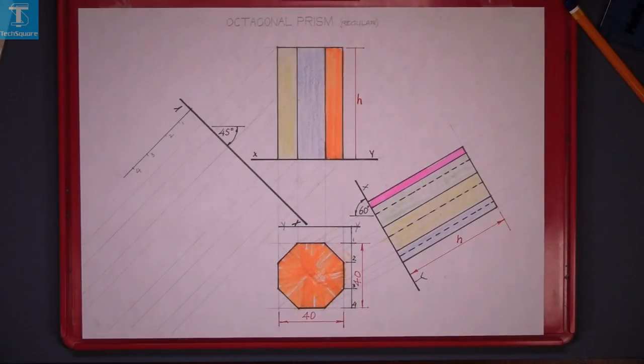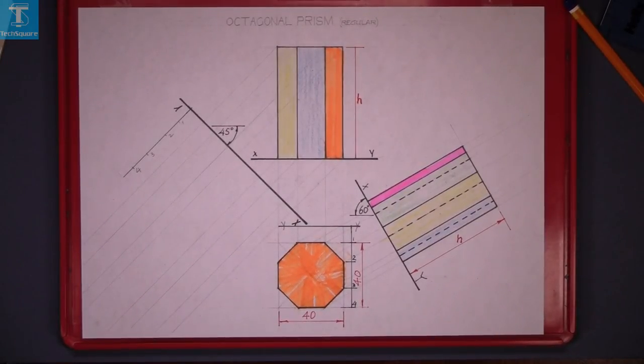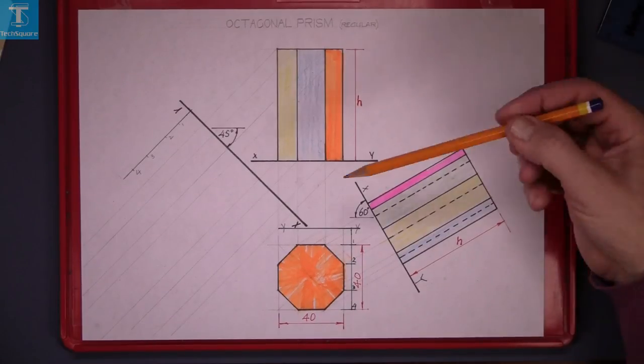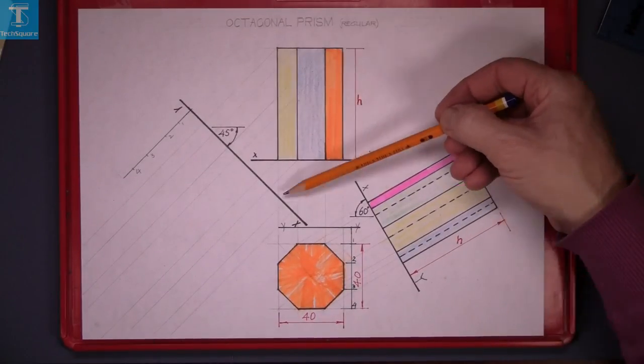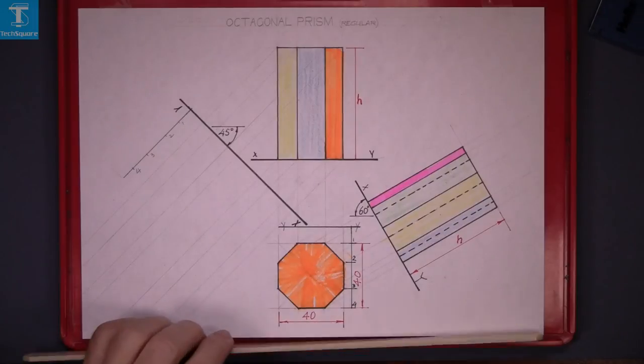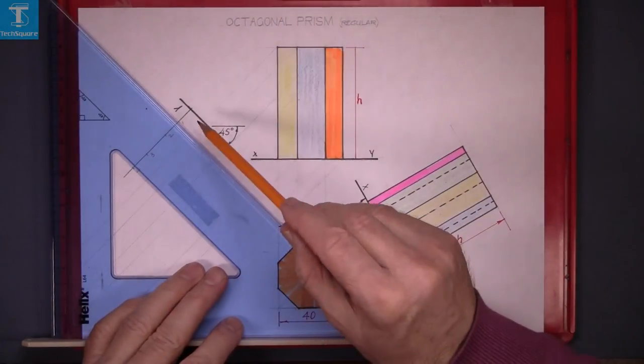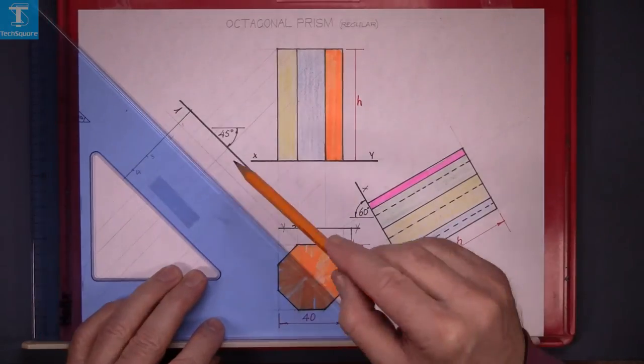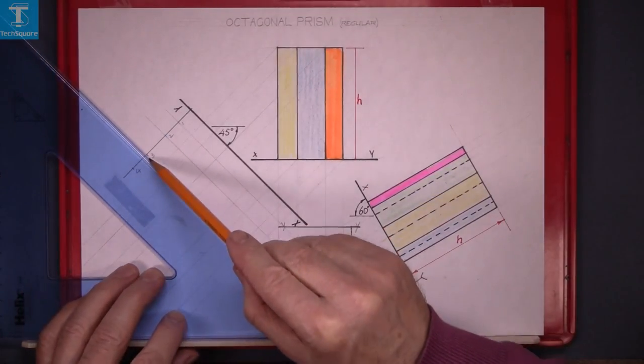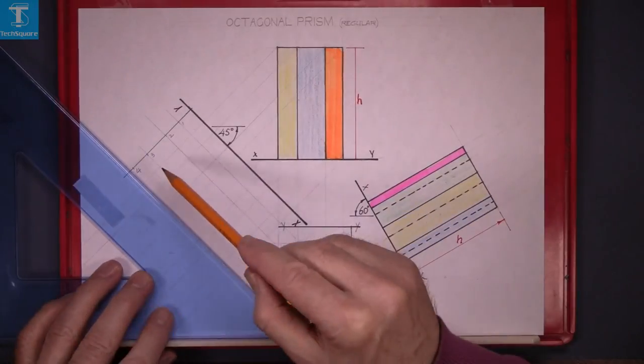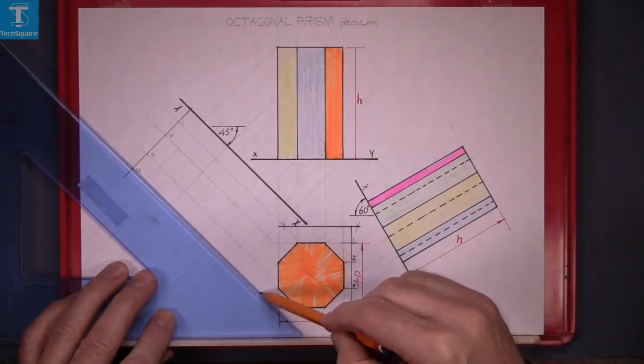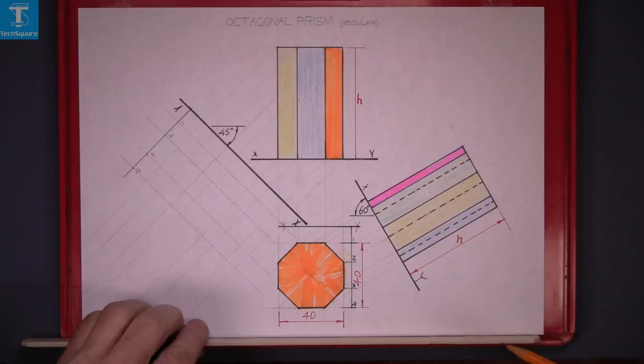Now draw those points parallel with the XY line. Parallel with the XY line. That's your four distances lined out.